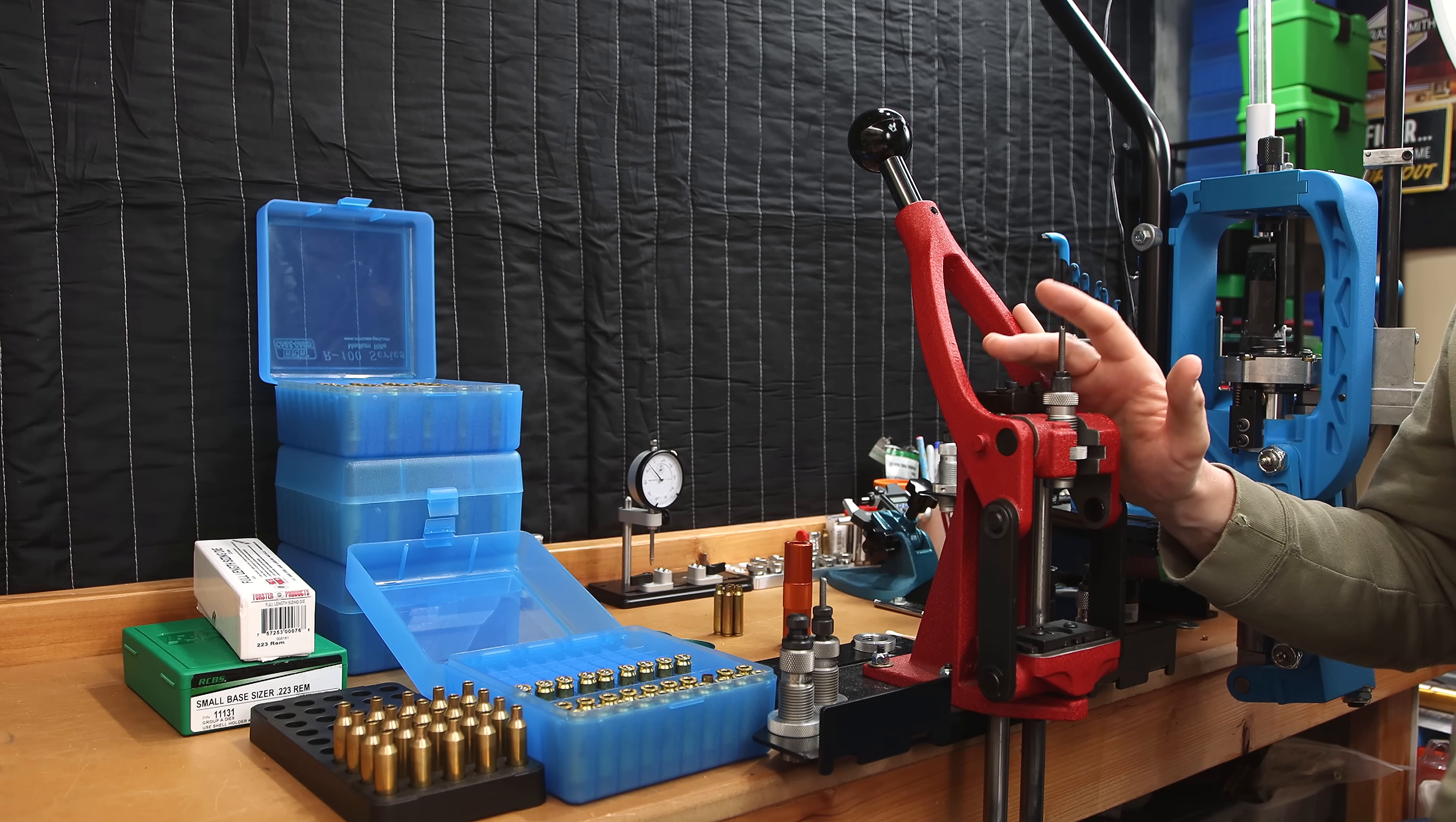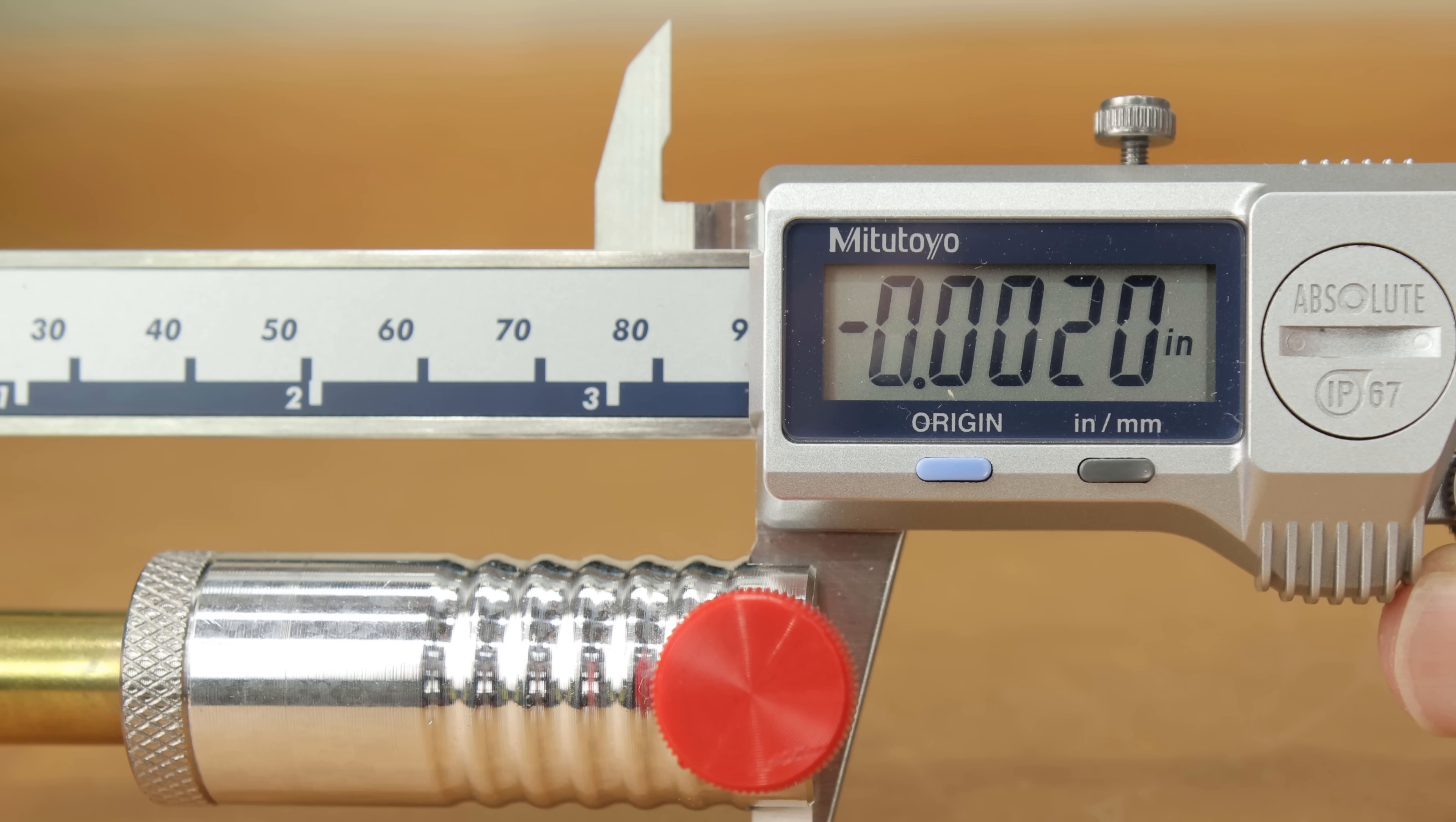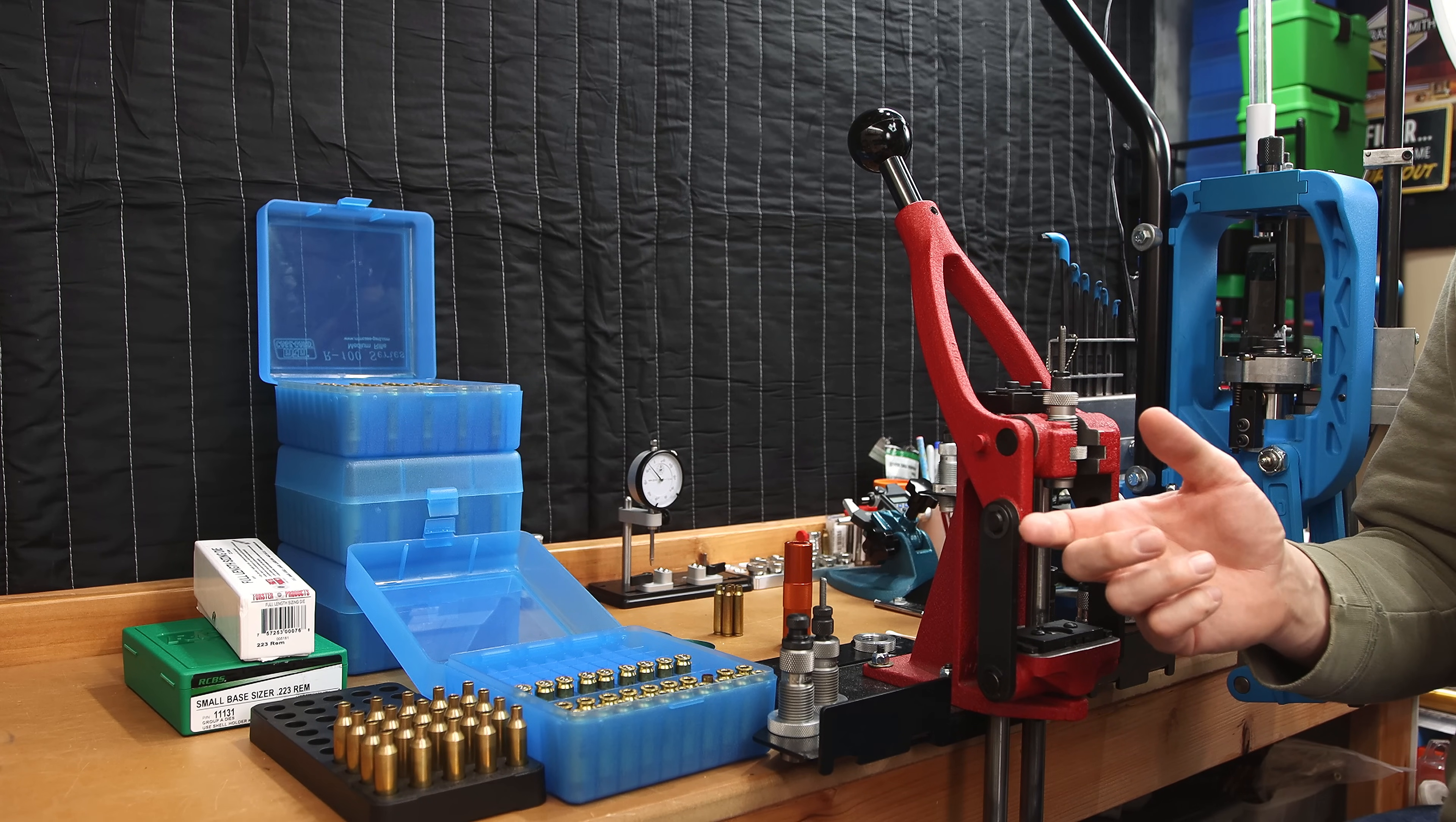Keep in mind when you're setting this up, you should have your brass prepped the way you intend to do it when you've sized all of your brass. Something like annealing or not annealing is going to change your die setting. So what about this 2 thousandths bump number, shoulder setback or whatever you want to call it. It's generally the number that I'm shooting for when I reload, at least for bolt actions.